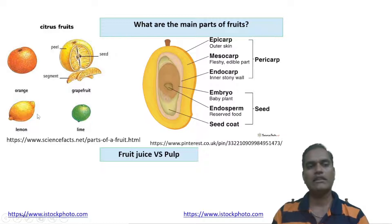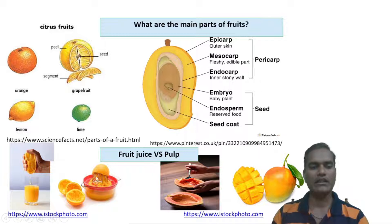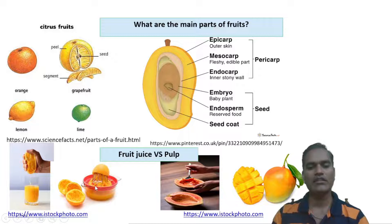Mostly citrus fruits contain fruit juice, while the remaining non-citrus fruits contain mostly fruit pulp. These fruit pulp and juice are extracted and then converted to different types of fruit juices. For citrus fruits, proper peeling, crushing, and pressing processes are used to extract the fruit juice. For fruits containing pulp, the pulp is removed using a pulper or scraping process, and after extraction it is converted into different types of fruit juices.